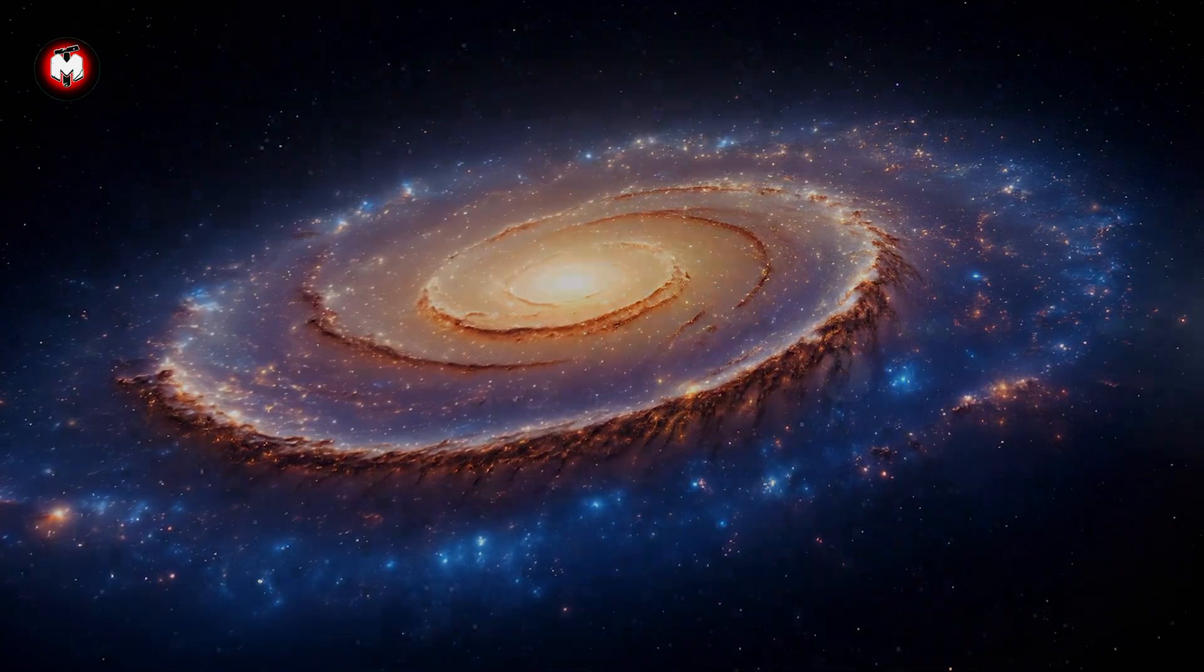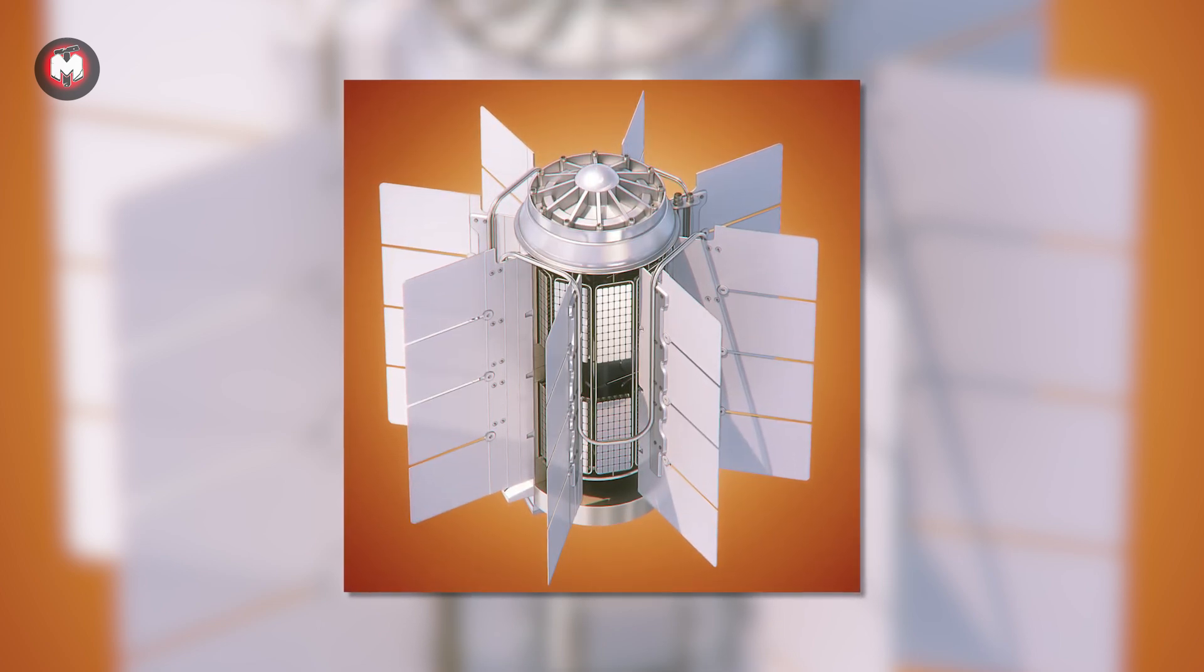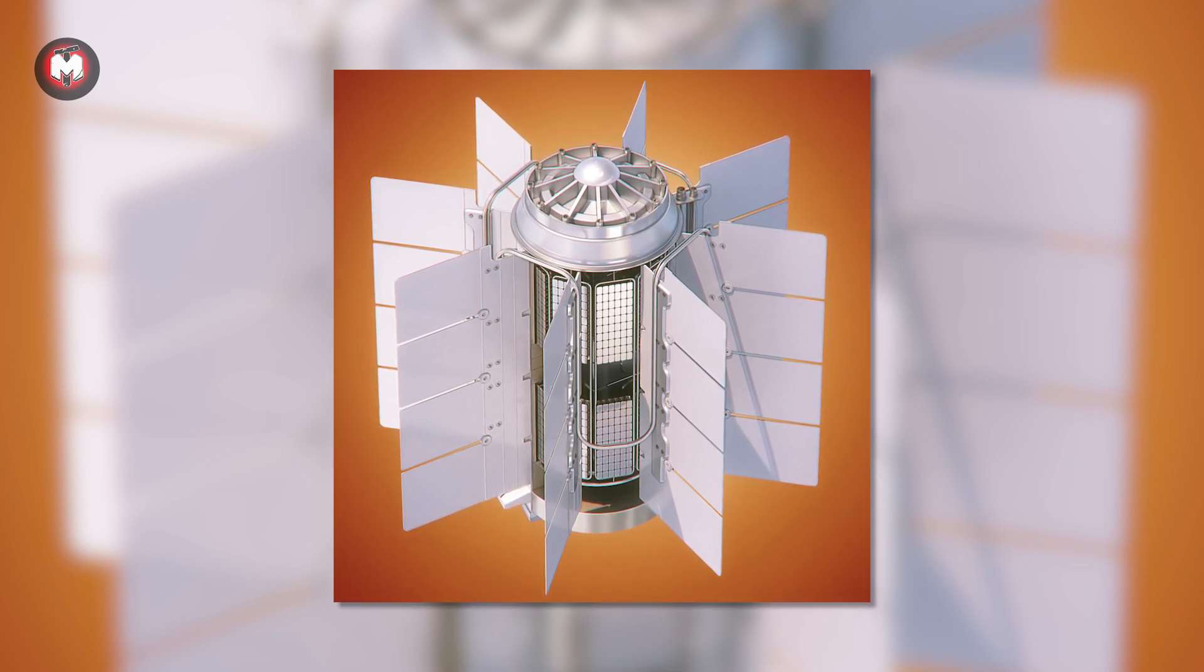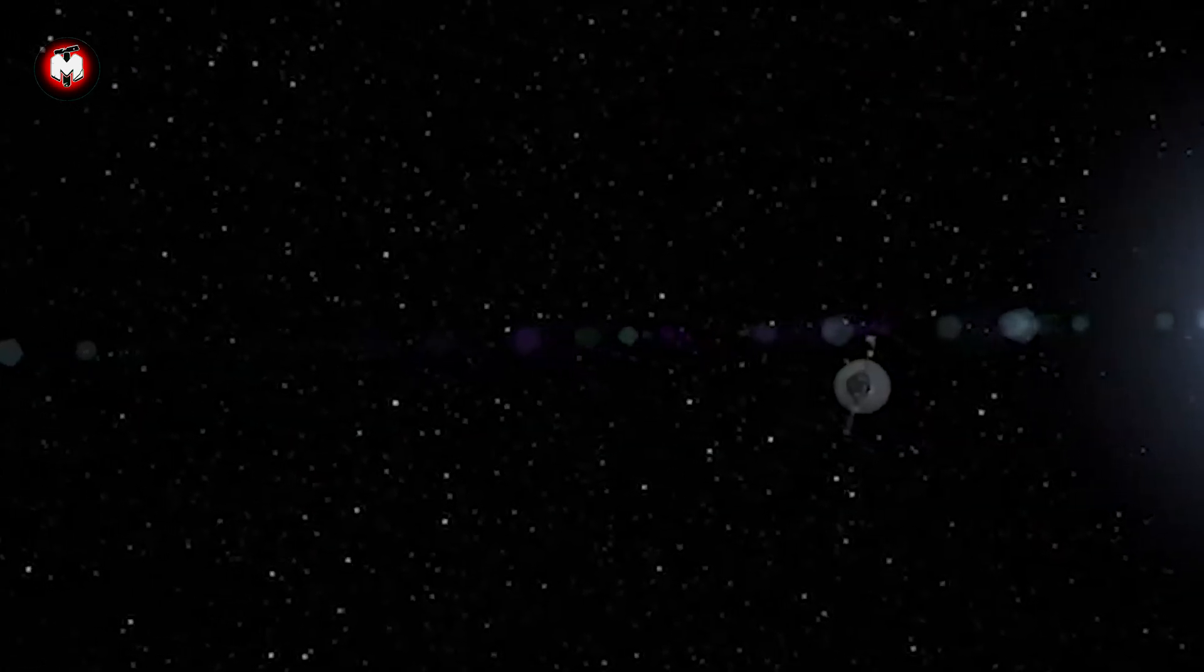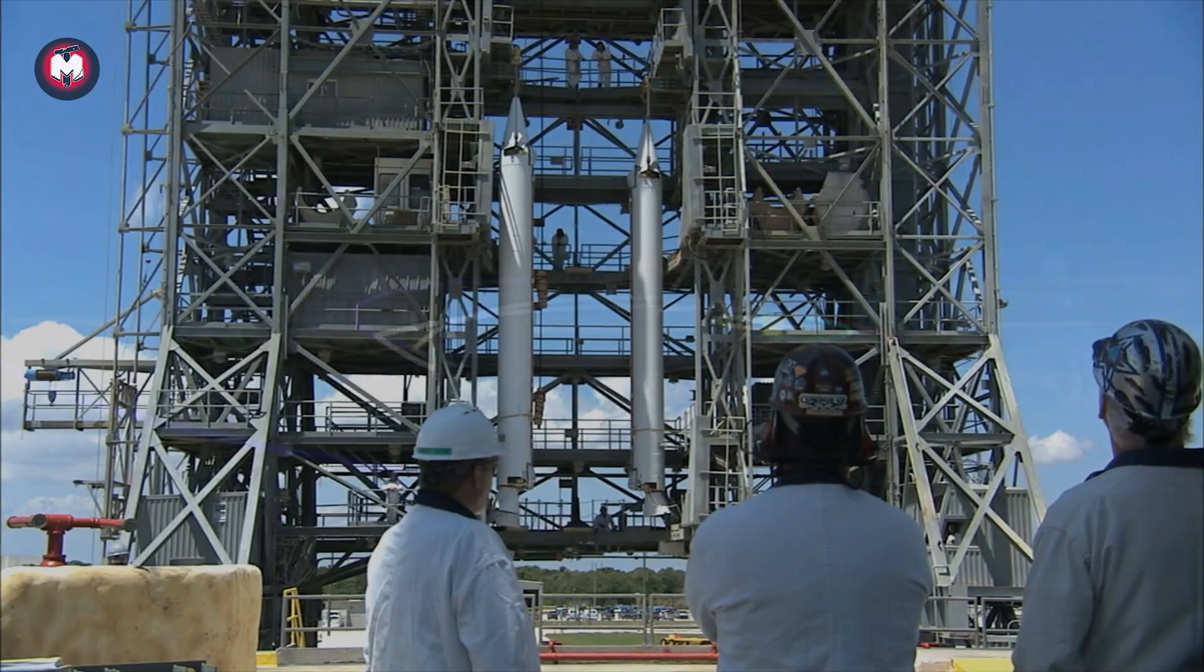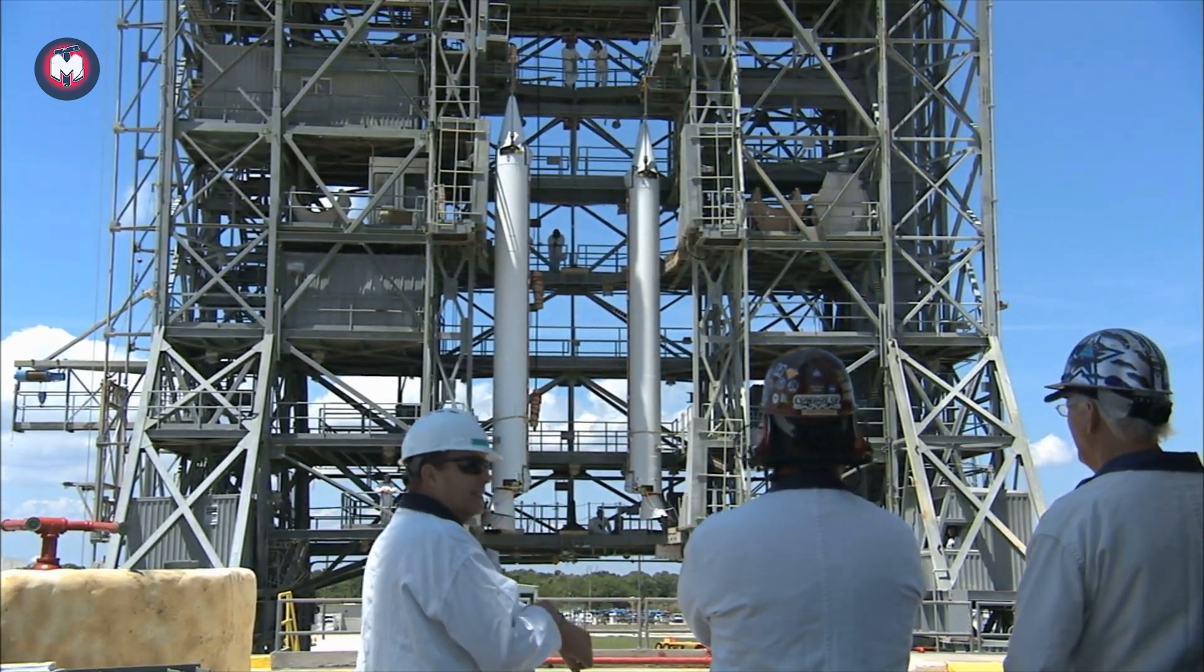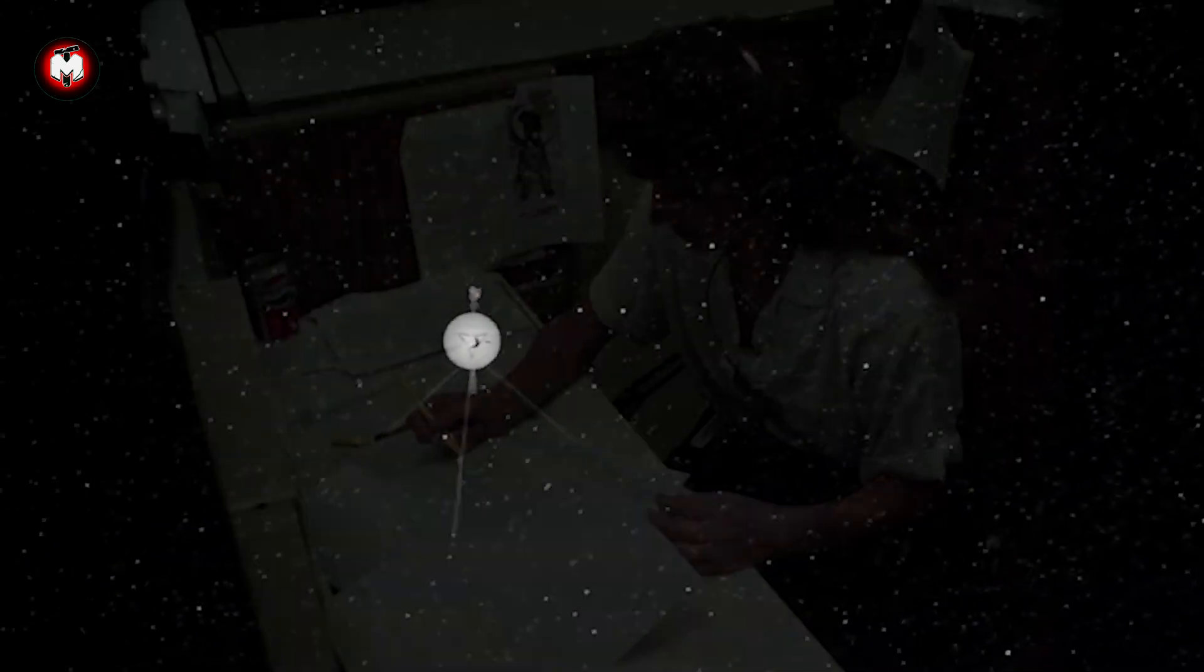What makes this story even more remarkable is that the Voyagers are still functioning after nearly five decades in space. They're powered by radioisotope thermoelectric generators—essentially nuclear batteries that convert heat from decaying plutonium into electricity. But these power sources are slowly dying. Each year, the Voyagers lose about four watts of power. NASA engineers have had to make tough choices, shutting down instruments one by one to conserve energy. Three years ago, they had to turn off the heater for the cosmic ray detector, a crucial instrument for studying interstellar space. Everyone expected it to fail in the extreme cold. Instead, it kept working at temperatures far below its design limits, continuing to send back valuable data. It's like a 50-year-old car not only still running, but setting new distance records every day.